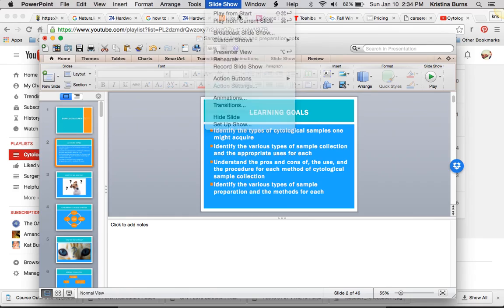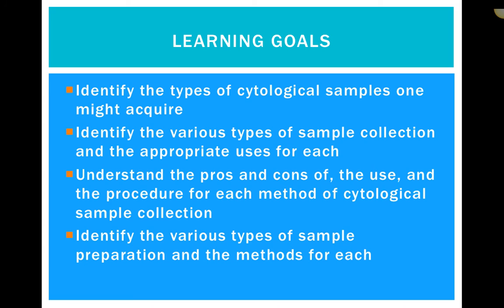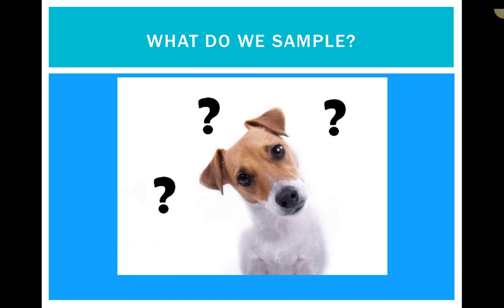Let's start with sample collection today. If you hear weird Chewbacca noises in the background, that's just Cinder, my dog. Or if I randomly yell, it's not the dog. So learning goals: identify the types of cytological samples one might acquire, identify the various types of sample collection and appropriate uses for each, understand the pros and cons of each method, and identify the various types of sample preparation and the methods for each. As we talk about sample collection, we'll try to stick to it as it specifically relates to cytology, although a number of these can also be used for parasitology too.